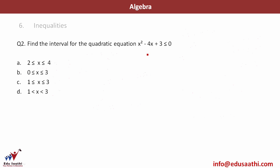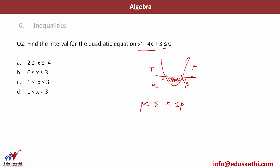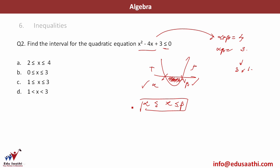Let's look at another quadratic question where the expression is less than or equal to 0. Since the leading coefficient is positive, the graph is a parabola and the function is negative between the roots alpha and beta. So x is between alpha and beta inclusive. Finding the roots: sum of roots is 4 and product of roots is 3, giving roots 1 and 3. So x is in the range 1 to 3, both included.